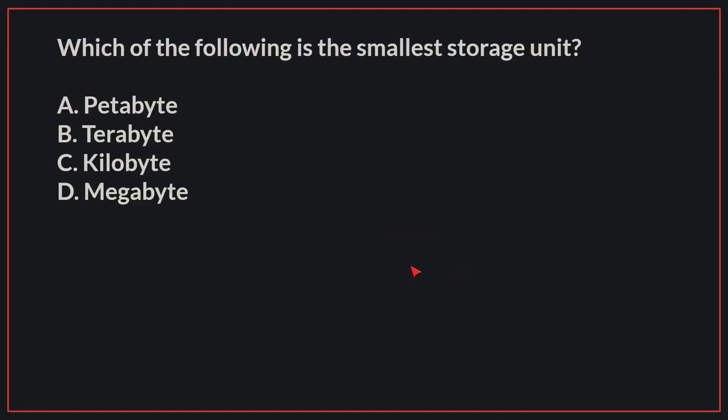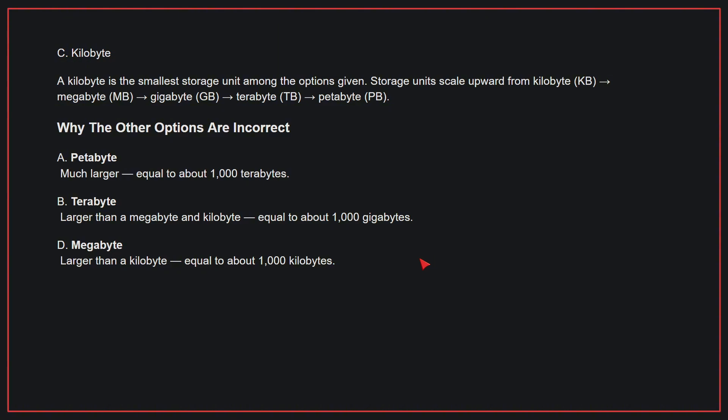Which of the following is the smaller storage unit? The correct answer is C, kilobyte. A kilobyte is the smallest storage unit among the options given. Storage units scale upward from kilobyte, megabyte, gigabyte, terabyte, and petabyte.